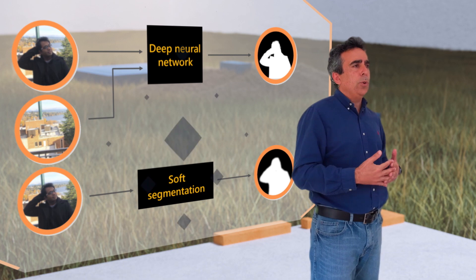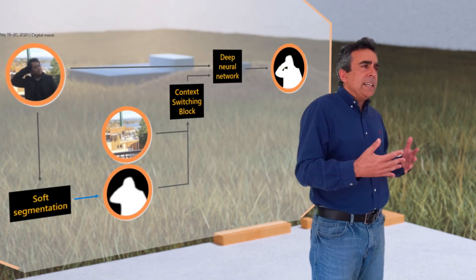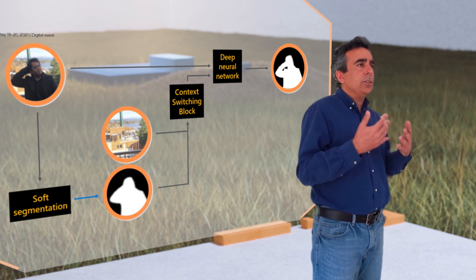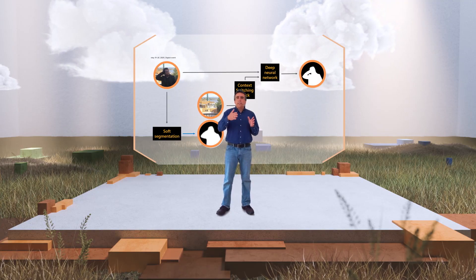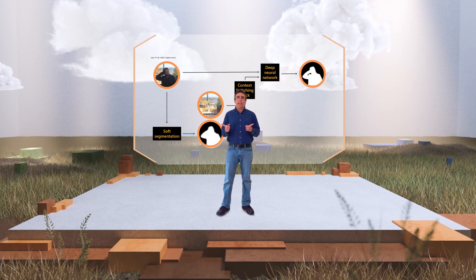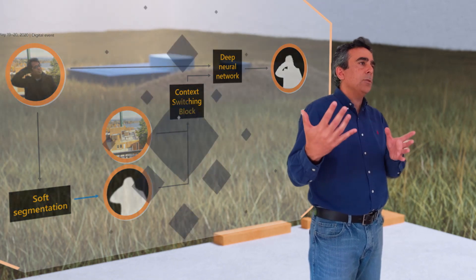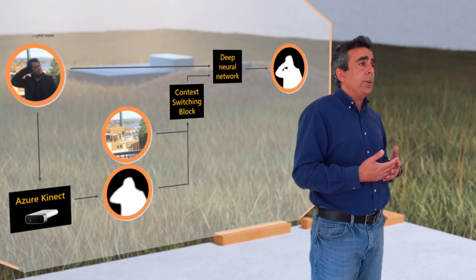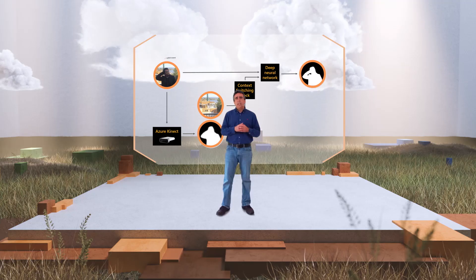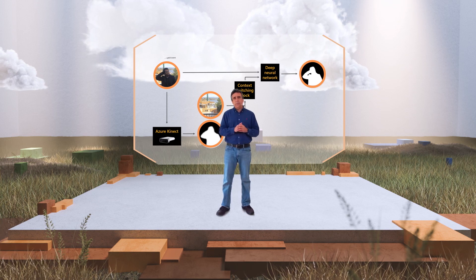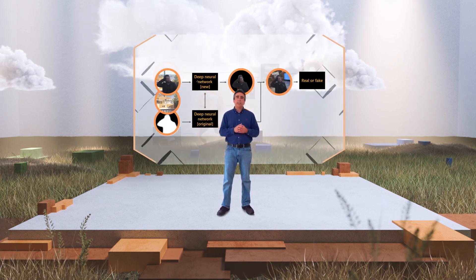What they did is combine these two models with a neural net architecture called context switching. What it does is pick the neural network depending on the conditions, so it takes the best of both worlds. In our case, we could go one step further because we have Azure Kinect. So what we did is replace the second neural network with the silhouette that is guessed by the Azure Kinect, which is much more accurate because it has that depth information that we were mentioning before.